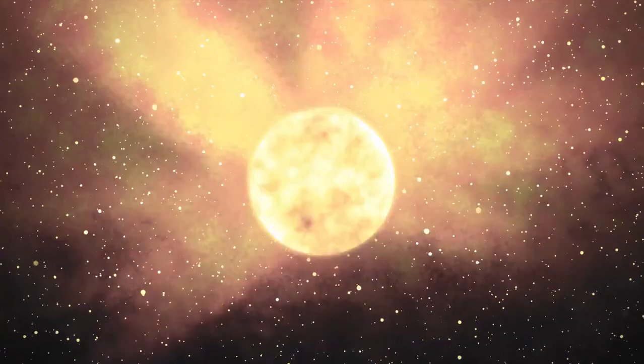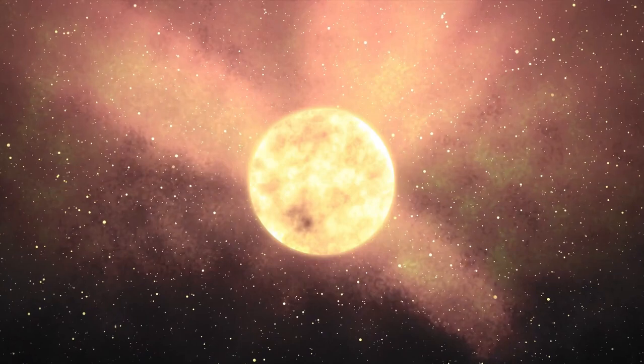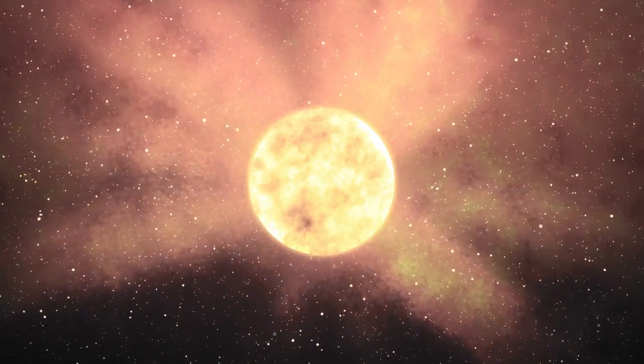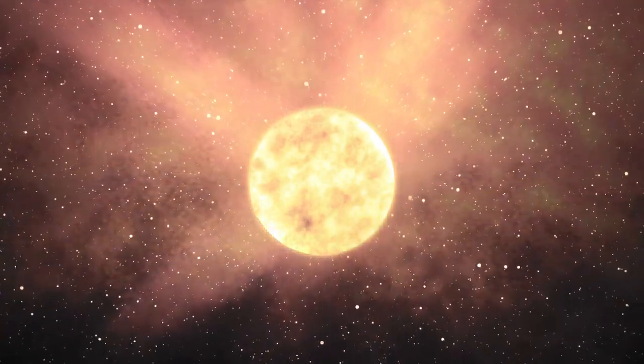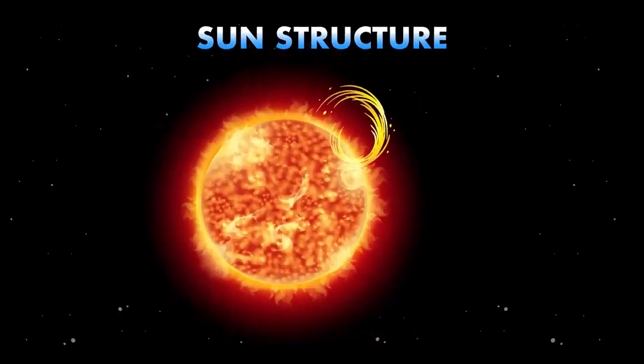As a red supergiant nearing the end of its life cycle, Betelgeuse is experiencing dramatic changes in its internal and external structure. The star is gradually exhausting its hydrogen fuel, a process with profound implications for its future.